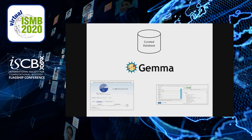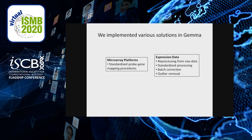I will be touching on each component throughout this recording. Here, I show the various strategies we employ in Gemma to solve the identified problems. For microarray annotations, we forego manufacturer-provided mappings and use a standardized pipeline to map probe sequences to genes. For expression data, all datasets are processed through a standard pipeline, and as far as possible, we reprocess the data from raw data files.